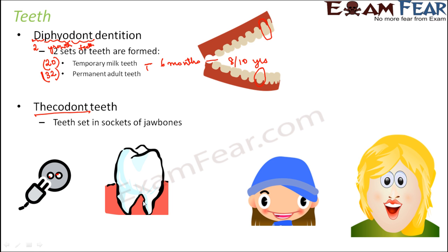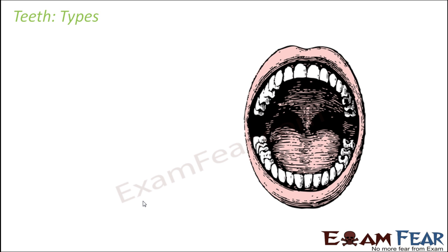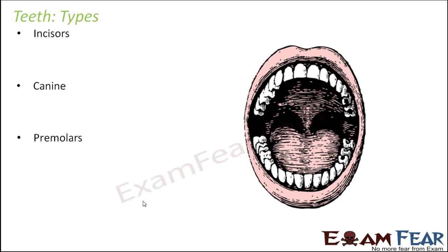So human beings have diphyodont dentition and also thecodont teeth. Please remember these terms. Now let us talk about the types of teeth. There are basically four types of teeth: incisors, canines, premolars, and molars. Let us see what they do and where they are located.